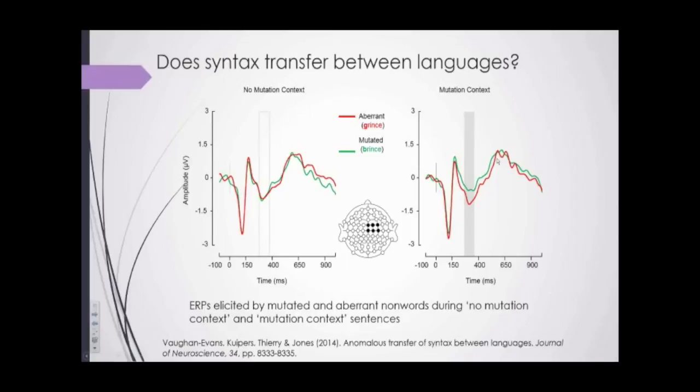Our interpretation is that participants were anticipating a mutation but were not anticipating an aberrant non-word. We're interpreting these results as strong evidence for syntactic transfer between languages. Also, this effect occurred independently of whether there was an overlap between the English word and the Welsh translation in terms of initial consonant, so we believe this is rule-based rather than a lexically driven process.